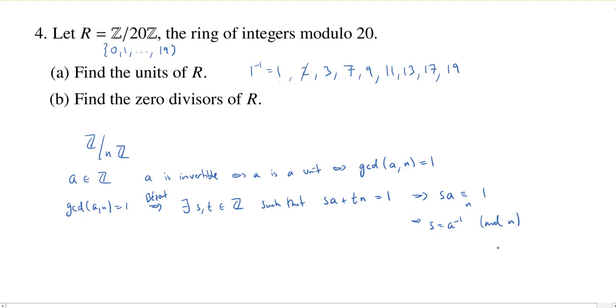All right, so that shows that if the GCD is equal to 1, then the element a that you chose, your arbitrary element of Z, is going to be invertible, i.e. it will be a unit.